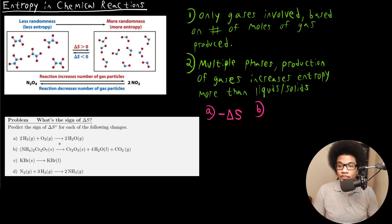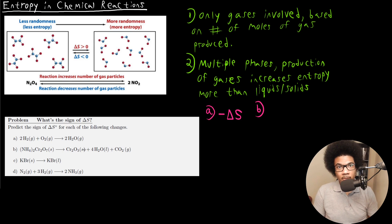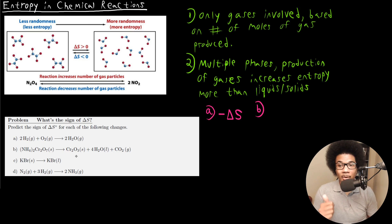For part B, we have this ionic chromium solid that is decomposing into different constituent parts. It's decomposing into three parts: it starts out as a solid, and this decomposition produces another solid, but it also produces a liquid and a gas. The liquid and the gas will both have higher entropy than the starting solid, so this would definitely be an increase in entropy — a positive ΔS.